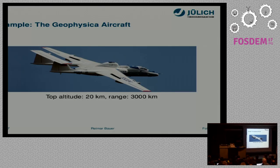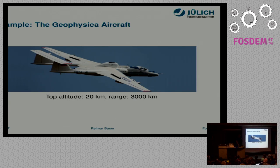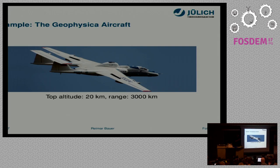This is an aircraft we could use. It was previously a spy aircraft from the Russian military. It has a range of 3,000 kilometers and an altitude of up to 20 kilometers. So we start it for example from Kiruna, or from India, or we try to start it from Nepal and fly into regions where no one has data yet.